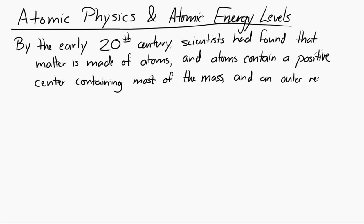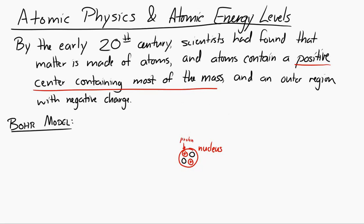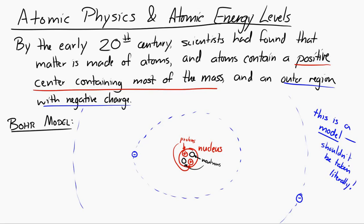This led to the Bohr model of the atom, which, put simply, was a nucleus at the center which contains protons and neutrons — and those protons and neutrons contain most of the mass of the atom — and then outside, there were electrons traveling around in these paths. Now, this is a model. It's called the Bohr model. It's not the Bohr reality, so it shouldn't be taken literally. It's a model of the atom, and it works pretty well.